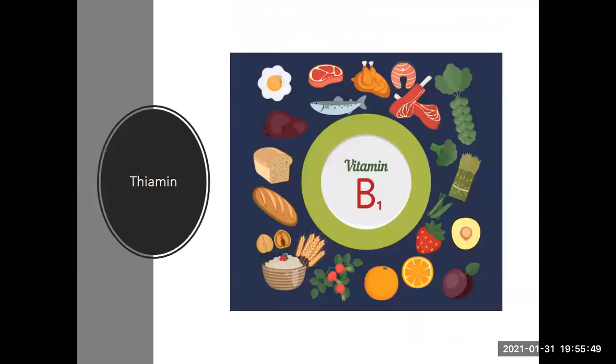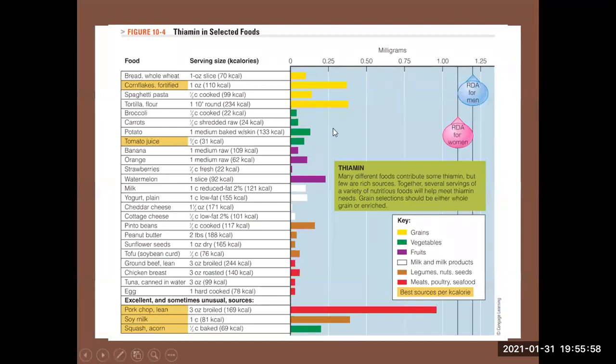So we will start first with the B vitamin, B1 vitamin, thiamine, which is the first one of the B-complex vitamins. Thiamine, as you can see, is very rich in carbohydrate-containing food, like bread and cornflakes.